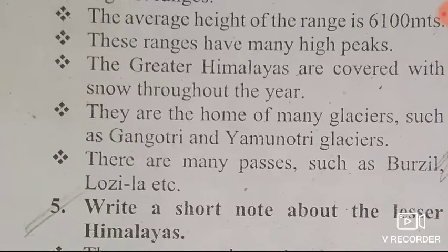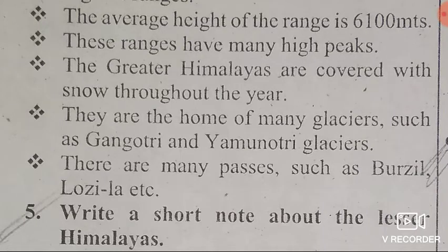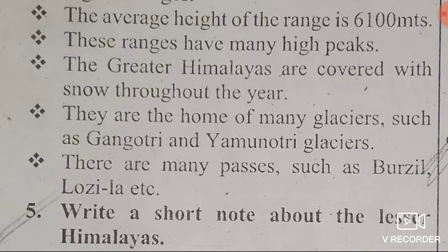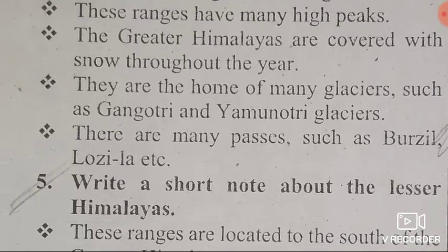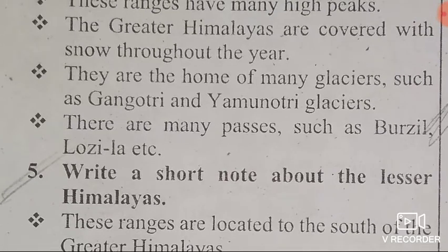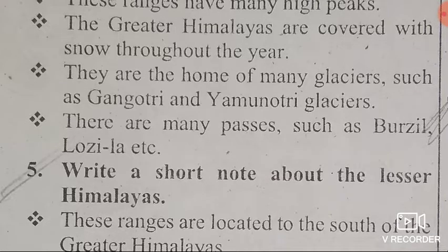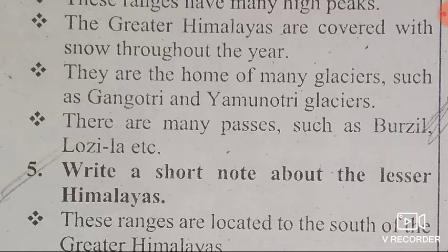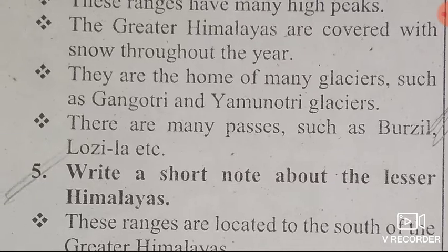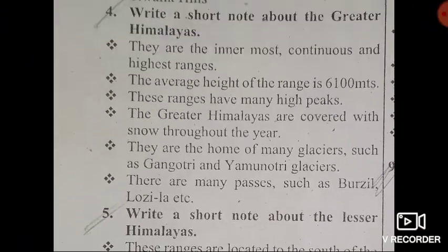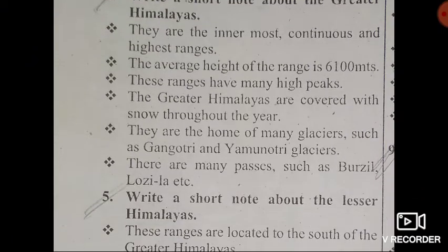Fourth point: the Greater Himalayas are covered with snow throughout the year. Fifth point: they are the home of many glaciers, such as Gangotri and Yamunotri glaciers. Last point: there are many passes, such as Burzil and Zojila. These are the characteristics of the Greater Himalayas.